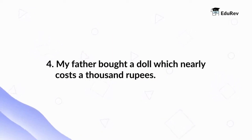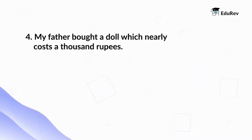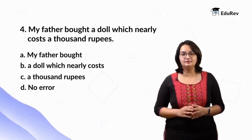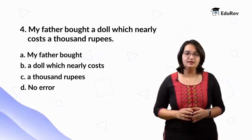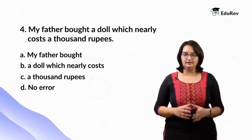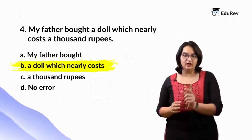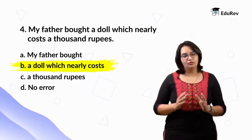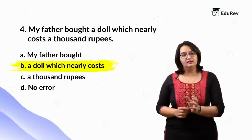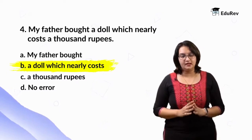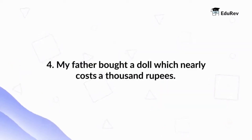Let us take a look at another example: My father bought a doll which nearly cost 1000 rupees. Option A: my father bought. Option B: a doll which nearly costs. Option C: 1000 rupees. Option D: no error. The error is in part B. A modifier should be placed as close to the noun it modifies as possible. Here, the modifier is nearly; however, costs comes between the modifier and the noun it is modifying, which is 1000 rupees. The corrected answer is: My father bought a doll which costs nearly 1000 rupees.